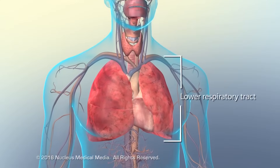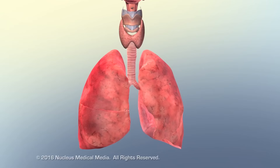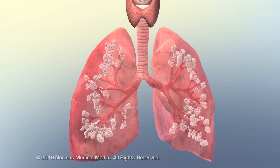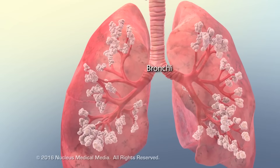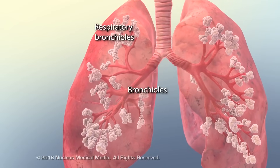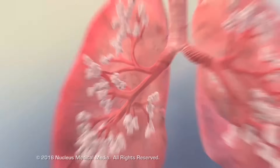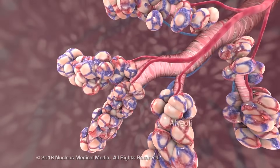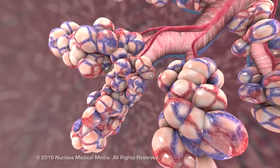The lungs are part of the lower respiratory tract and contain a series of subdividing tubes, beginning with the bronchi. Air passes through the bronchi into smaller tubes called bronchioles, then into tiny elastic sacs called alveoli, where gas exchange occurs.